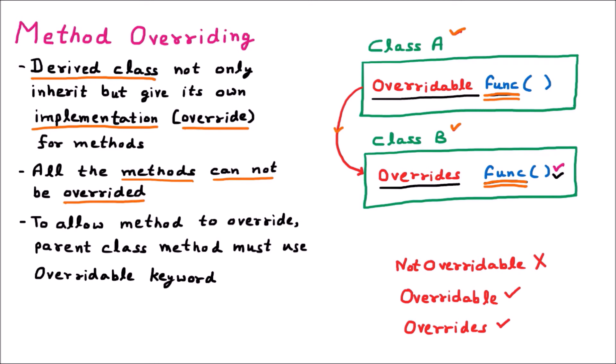It is not possible that all parent class methods are overridable. If we are using the 'not overridable' keyword before any method in the parent class, then that method cannot be overridden. If class A as the parent wants its method 'func' to be overridden by the child, then the 'overridable' keyword will be used. Whenever we apply the 'overridable' keyword, that means the method is ready and available for overriding.